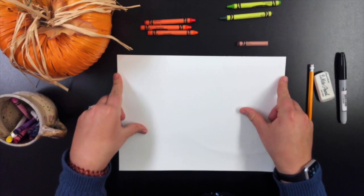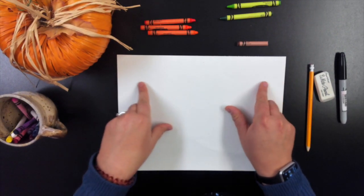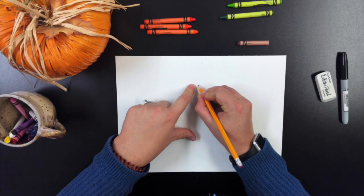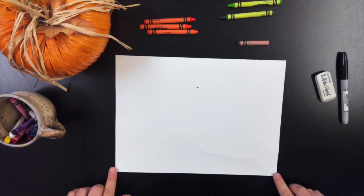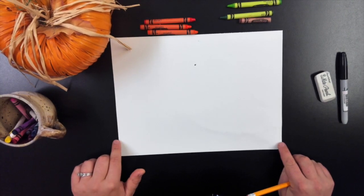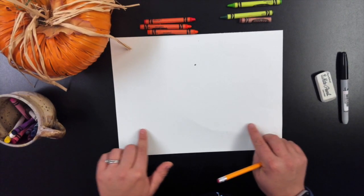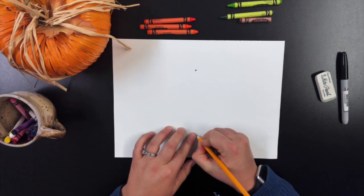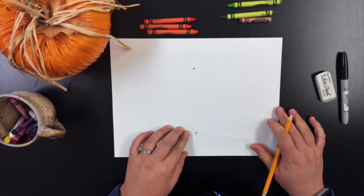We're going to start off with our fingers at the top of the page. We're going to slowly drag them down at the same time and then bring them into the middle. Put a dot where your finger is, and we're going to do the same thing but coming up from the bottom. We're going to go up slowly and come in. Then we have two dots.